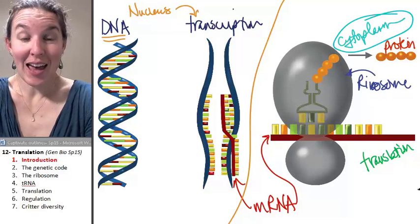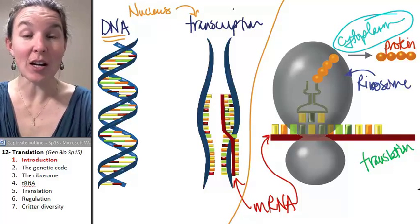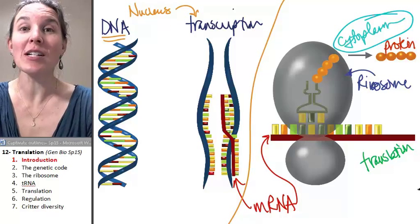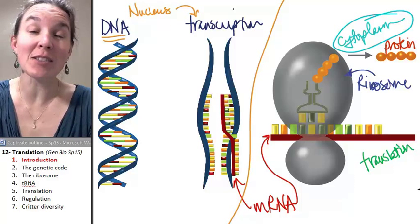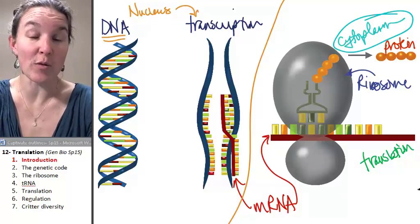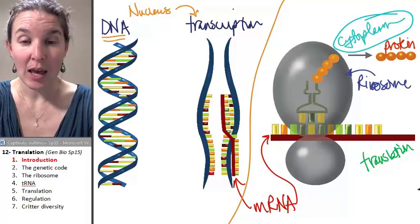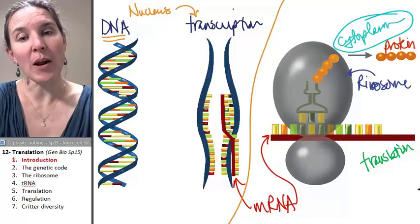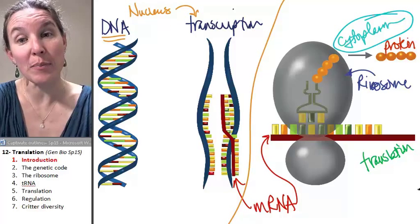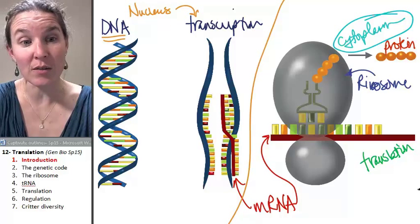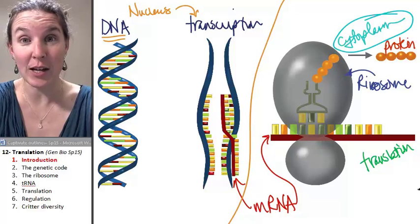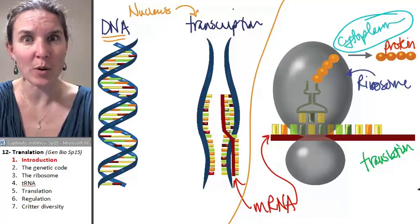I'm back. And now we're going to talk about translation. We're going to take the little messenger RNA molecule we just made through the process of transcription, and we're going to talk about how we are going to use that information to build ourselves a protein in the cytoplasm using the ribosome.